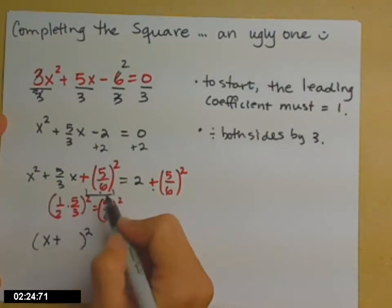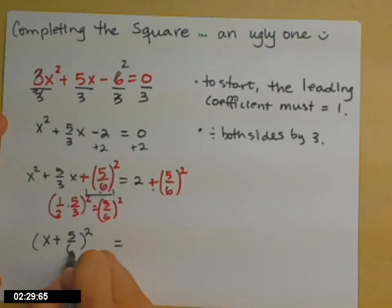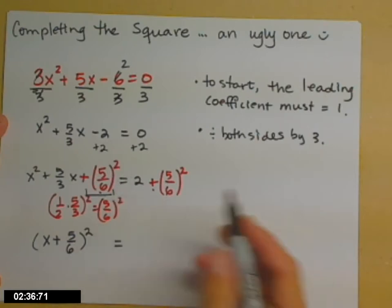And now this last part, especially when it's a fraction, it's sometimes tricky to figure out. But it's whatever was in the parentheses before you square it. So x plus 5 sixths squared, if you square that out, you would get what we have up here.